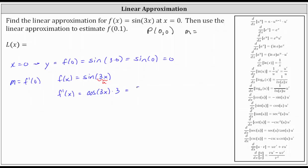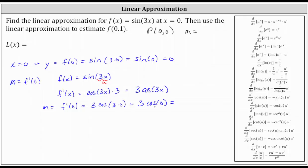This gives us f prime of x equals three times the cosine of three x. So now we can find the slope of the tangent line by determining f prime of zero, which is three times the cosine of three times zero, which is three times the cosine of zero. The cosine of zero is one, three times one is three. So now we know the slope of the tangent line is three.